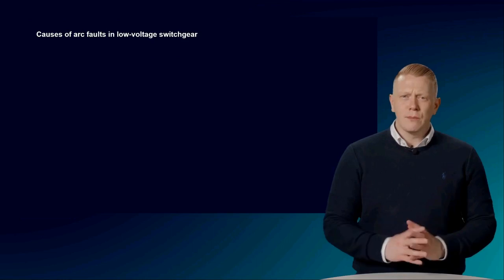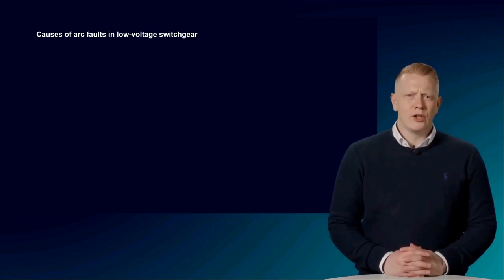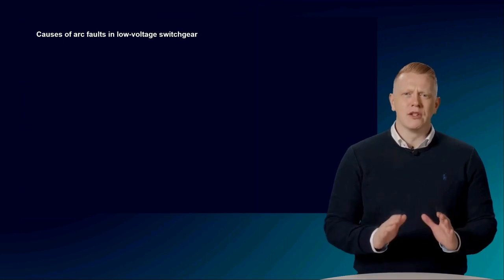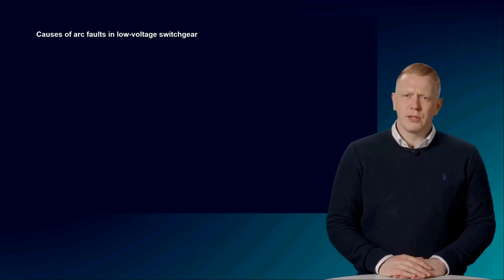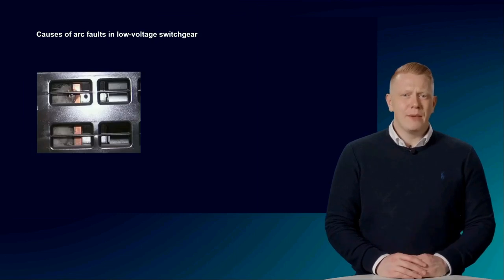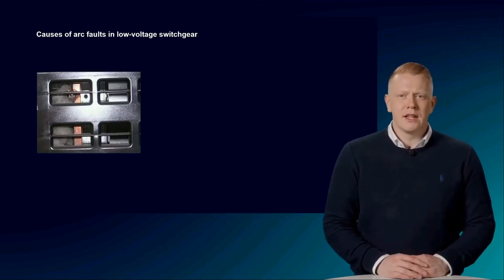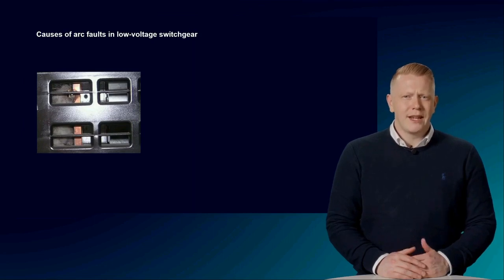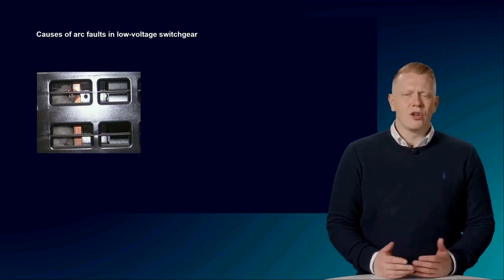It is important to know how such incidents can occur. Arc faults are very rare — they represent an absolutely exceptional situation. In practice, we see a wide range of possible causes. On one hand, these can be external circumstances such as pollution, which means the insulation properties in the switchboard are no longer guaranteed. This can also be caused by animals that enter the system and cause a short circuit.